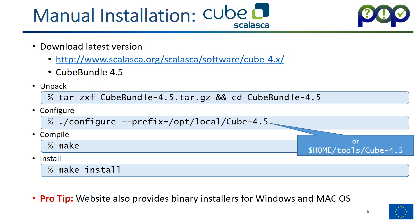If you have a Windows system or a Mac system, the Scalasca website also provides binary installers where you can just download the package, click on the installer, and have the software installed.